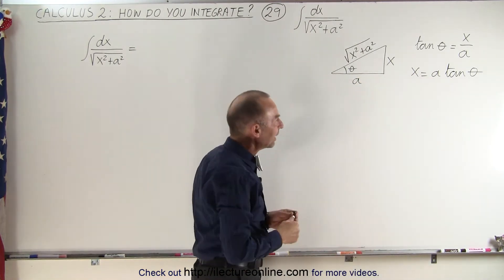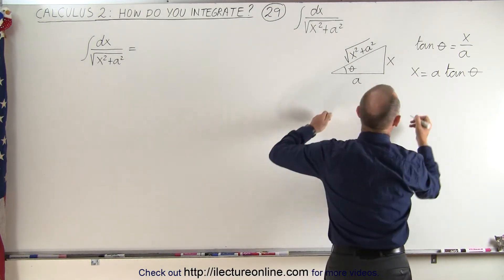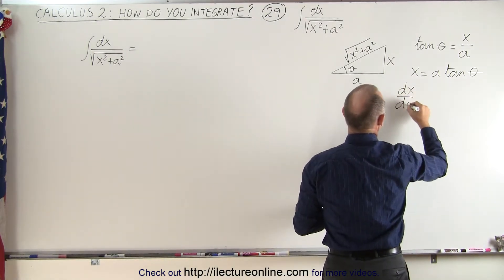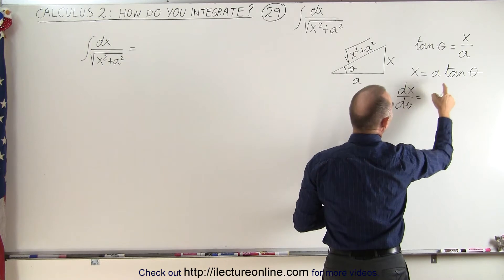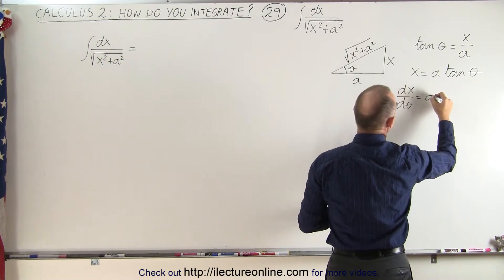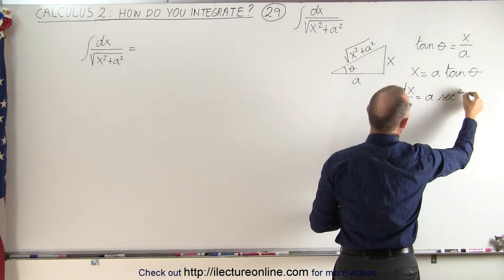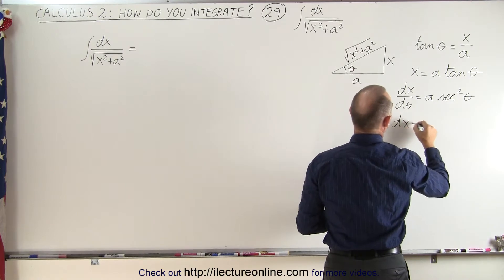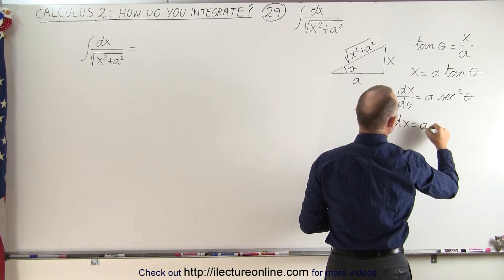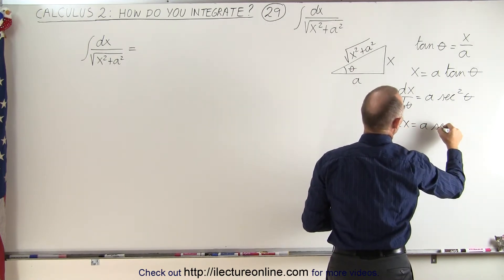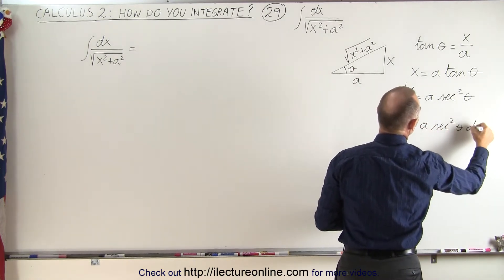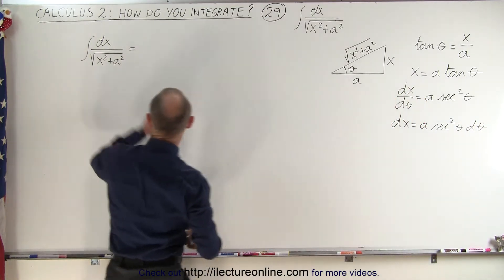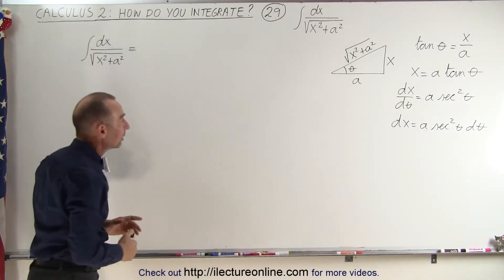If we now take the derivative of that, we write dx/dθ, that will be equal to a times the secant squared of theta. So dx will be equal to a times the secant squared of theta times dθ, which takes care of the numerator of the integral.